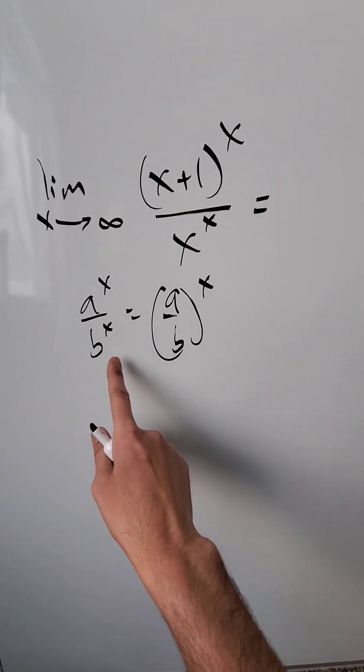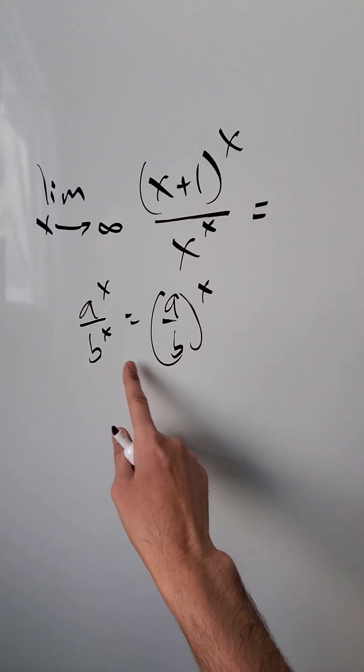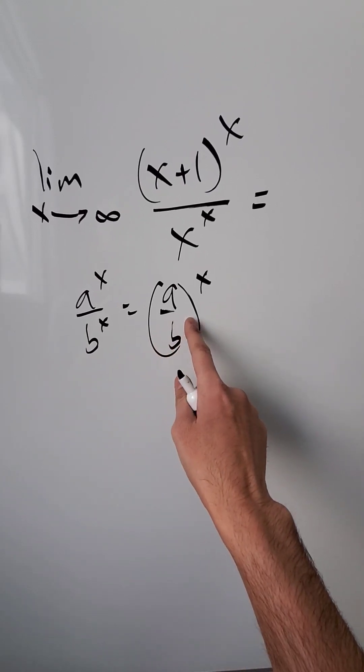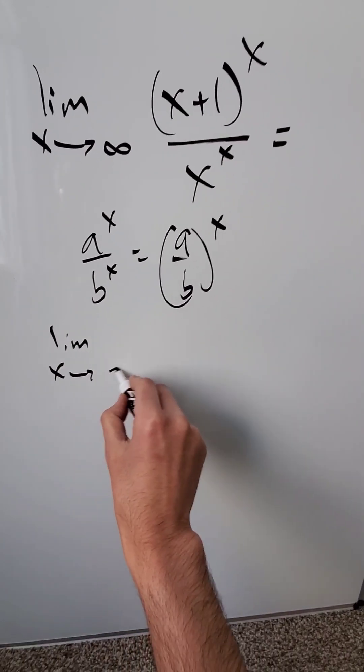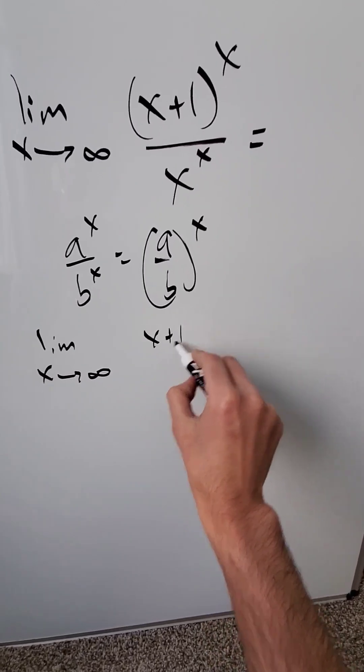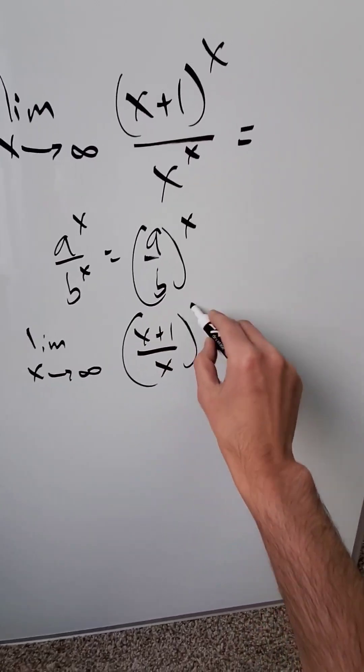I want to rewrite this using the law of exponents: a to the power of x divided by b to the power of x. You can rewrite it like this. Limit as x approaches infinity, I have x plus 1 divided by x, all of this to the power of x.